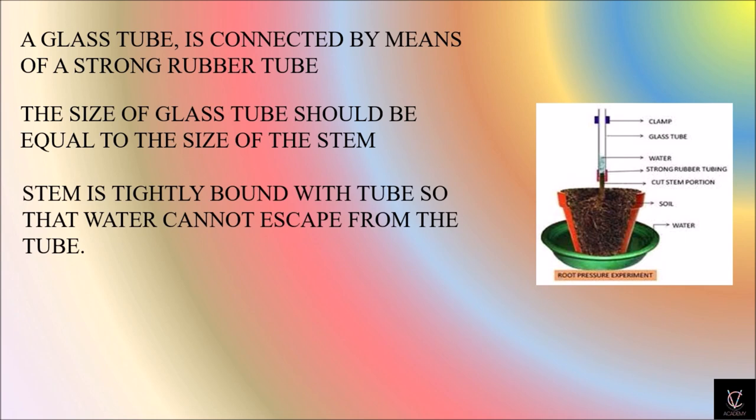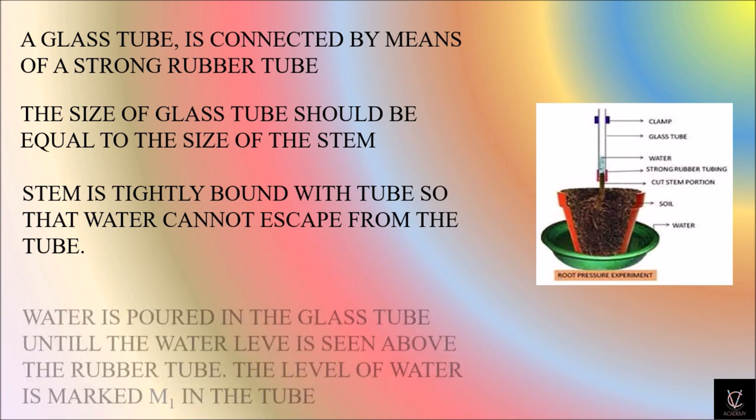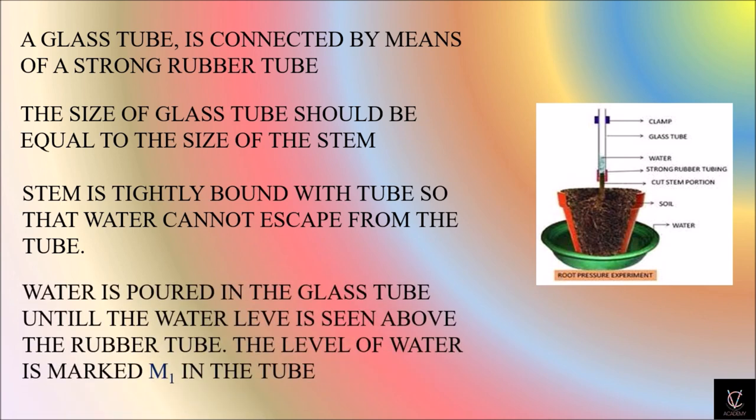The stem is tightly bound with tube so that water cannot escape from the tube. Uneven size of the glass tube may result in the leakage or escape of water from the tube. In order to avoid this type of situation, we will select the glass tube which is the size of the stem and fix it with rubber tubing tightly so that no escape of water is done from the tube.